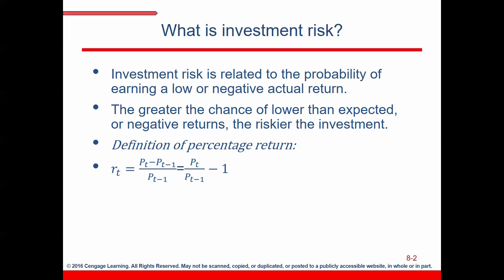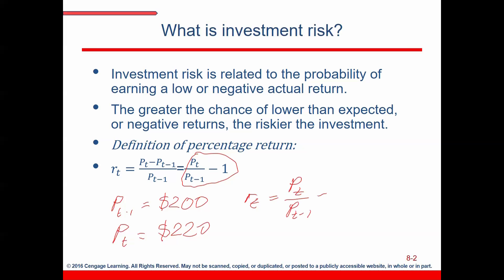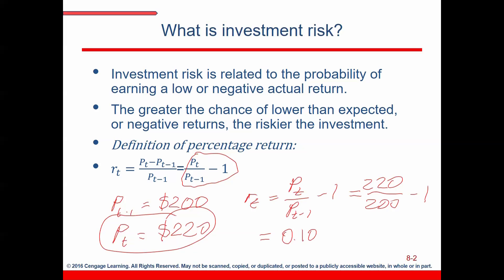Let me give an example. Assume that somebody bought an Apple stock for $200 yesterday, so the price at t minus 1 is $200. And assume that the price of Apple is $220 today. Then the return is: price at time t divided by price at time t minus 1, minus 1 — so $220 divided by $200, minus 1 — which gives 0.10, or 10%. So 10% is the rate of return.